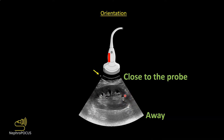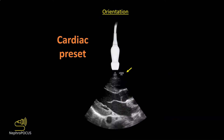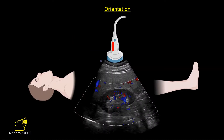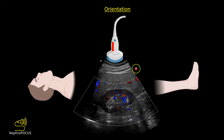One important caution: when using the cardiac preset with a phased array probe, the orientation marker on the screen flips to the right side of the image. Everything else remains the same — the screen indicator still corresponds to the probe orientation marker, structures closer to the probe are on top, and structures farther away are at the bottom. For example, when viewing the right kidney, the liver appears at the top of the image with the kidney below it, and the orientation marker toward the patient's head makes the left side of the screen superior.